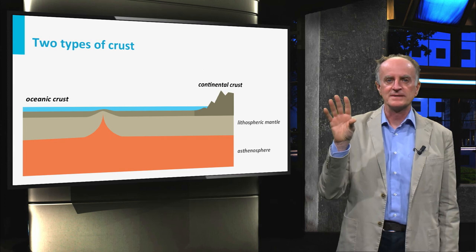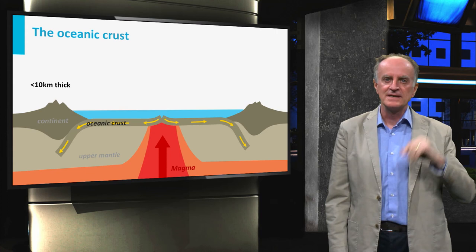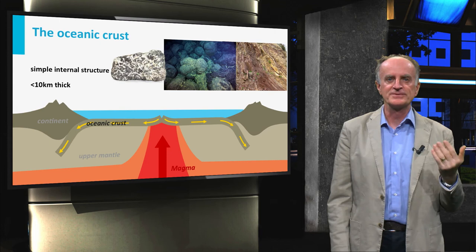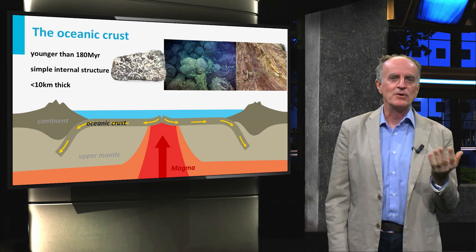The oceanic crust is simple, is typically less than 10 km thick, is made up of three fairly continuous layers composed from bottom to top of gabbros, basalts and sediments, and has young ages, never older than 180 million years ago.